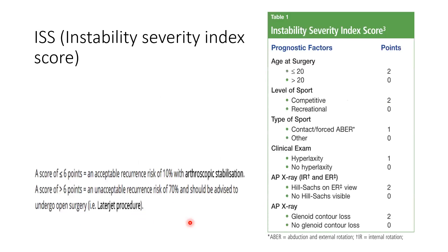The Instability Severity Index Score evaluates the outcome of treatment with arthroscopic repair. Scoring is based on: age at surgery (less than 20 or more than 20), level of sport (competitive or recreational), type of sport (contact or non-contact), clinical examination for hyperlaxity, X-ray for Hill-Sachs lesion, and whether glenoid contour is lost.